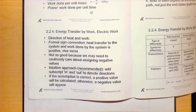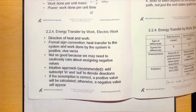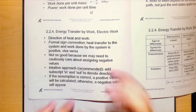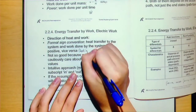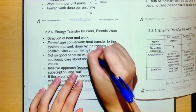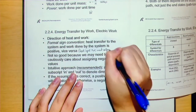Similarly, a commonly used formal sign convention is: if heat transfer is to the system, Q is positive; and if work is done by the system, W is positive, and vice versa. In short, heat input is positive and work output is positive.